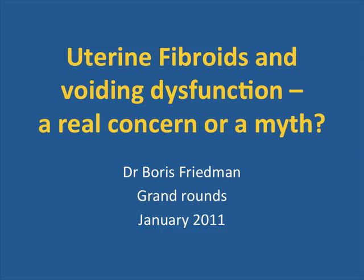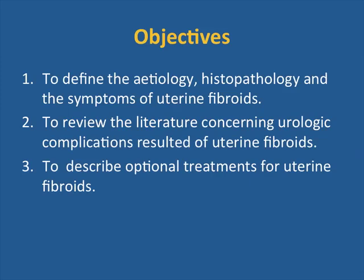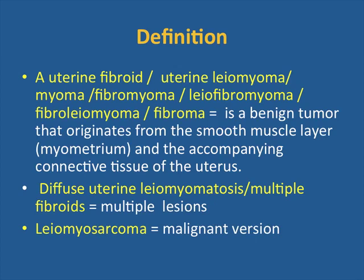The talk today is about uterine fibroids and urologic dysfunction. It's quite an interesting topic, especially for me — I was not familiar with this during my residency. As a urologist, I saw it maybe once or twice, but during these few months there were a few cases. The objectives are: to define the etiology and histopathology of uterine fibroids, to review the literature concerning urologic complications resulting from these lesions, and to describe the optional treatments briefly.